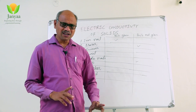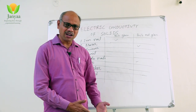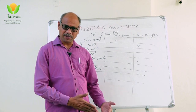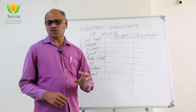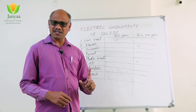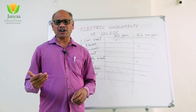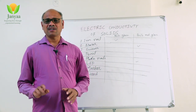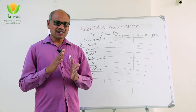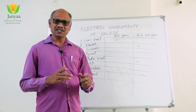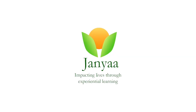Not all solids allow electricity to pass through them — only some do. Materials that allow electricity to pass through them are called conductors; materials that do not allow current to pass through them are called insulators. Now, list out the materials you have collected and classify them into conductors, semiconductors, and insulators.